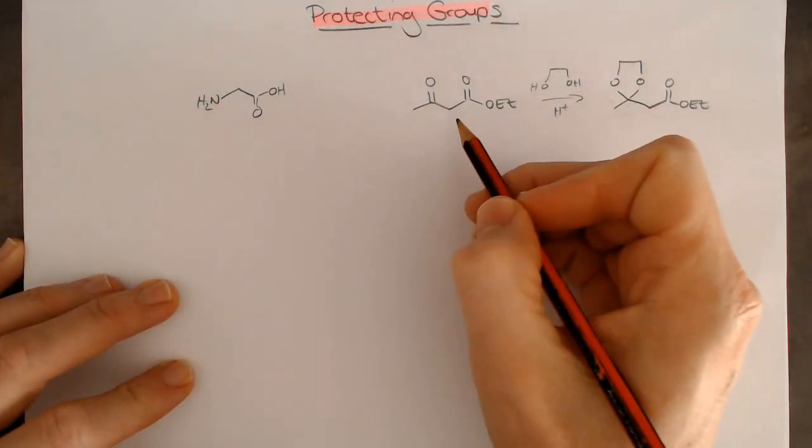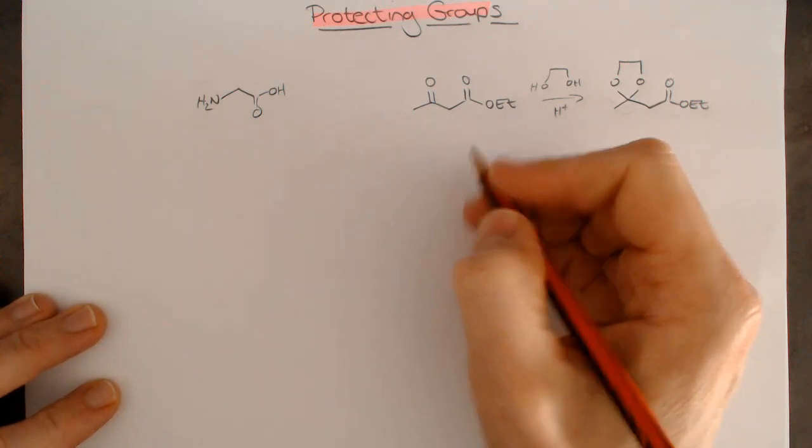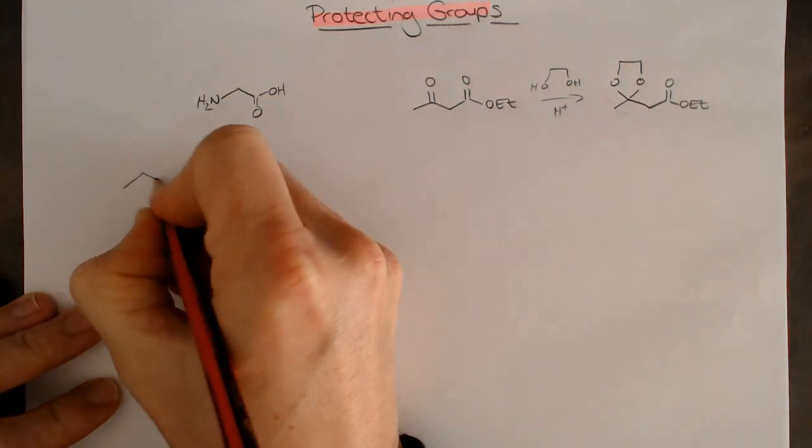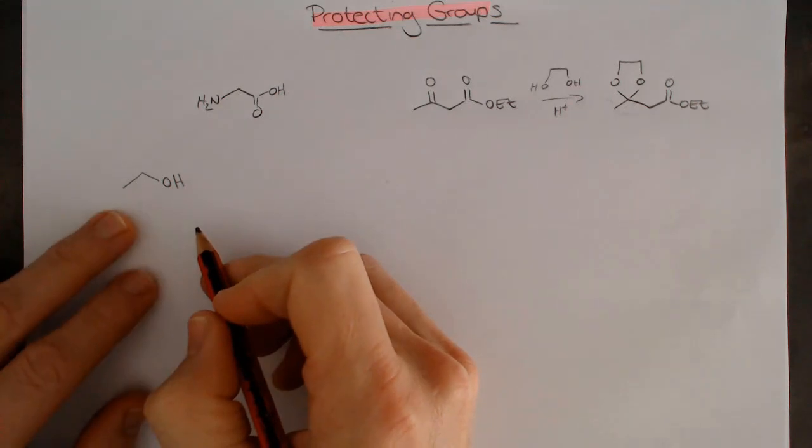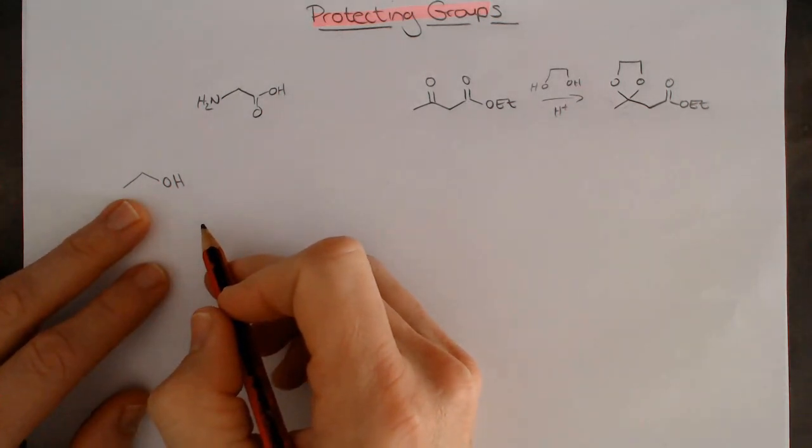So that's for the ketone, but let's look at all the different functional groups. I'm going to start by looking at an alcohol and how we can protect an alcohol. There are two ways we're going to look at with alcohols.